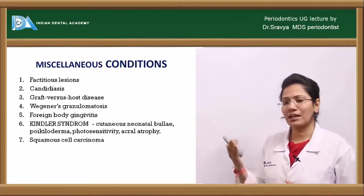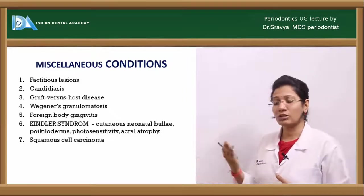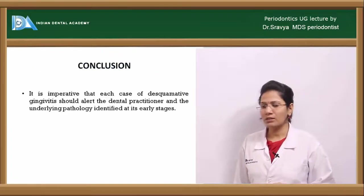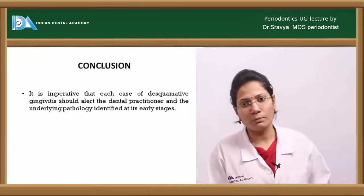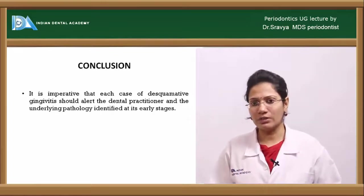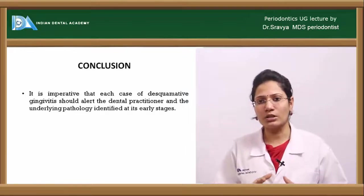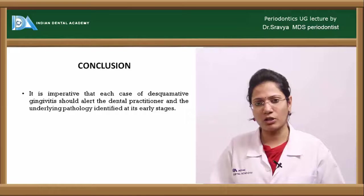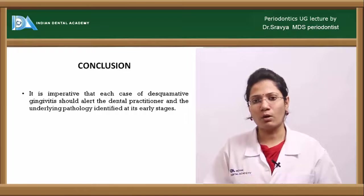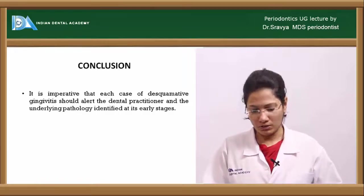Other miscellaneous conditions that can manifest as desquamative gingivitis include factitious lesions, candidiasis, graft versus host reactions, orofacial granulomatosis, Kindler syndrome, foreign body reactions, and even squamous cell carcinoma. In conclusion, it is essential to first identify the underlying pathology through thorough history-taking and then treat the underlying systemic condition with supplemental therapy — rather than only masking the desquamative gingivitis itself.